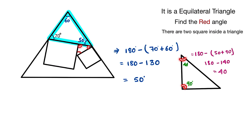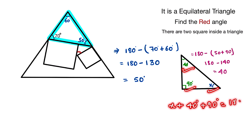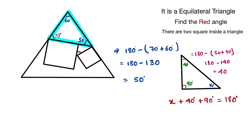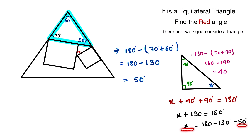Now we let the unknown angle be x. The sum of all angles in a triangle equals 180 degrees, so x plus 40 plus 90 equals 180. That gives x plus 130 equals 180, so x equals 180 minus 130, which equals 50 degrees.